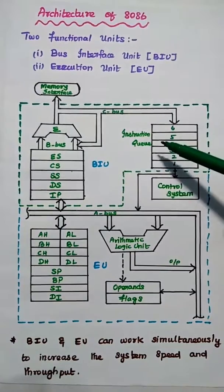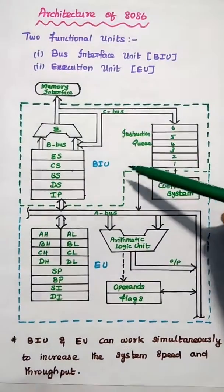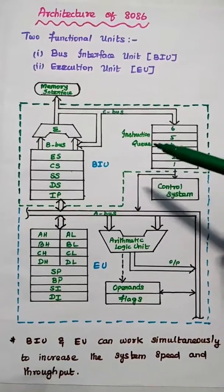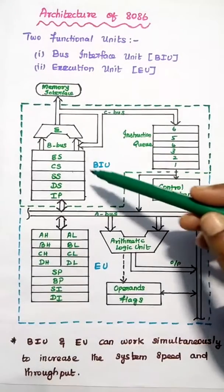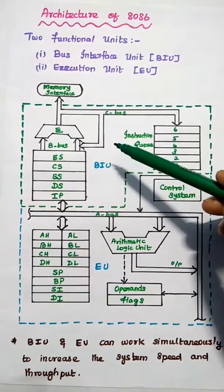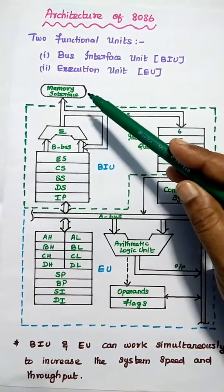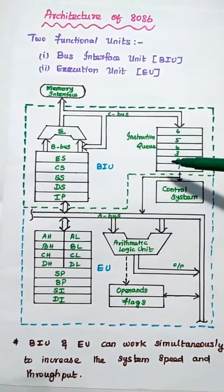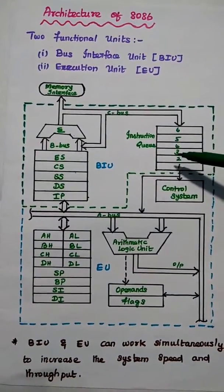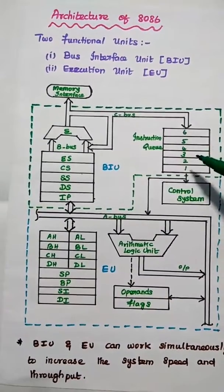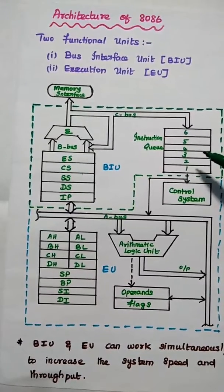The instruction queue is very important in the BIU. To speed up program execution, the bus interface unit fetches six instructions from the memory locations and stores them in the instruction queue. It follows the first-in, first-out principle.